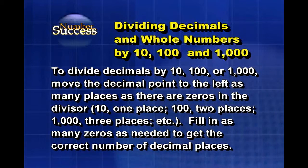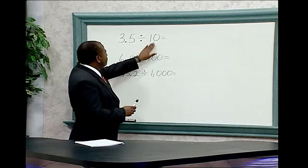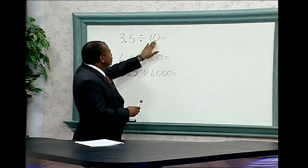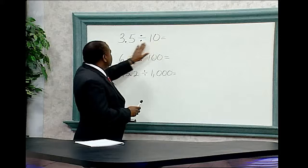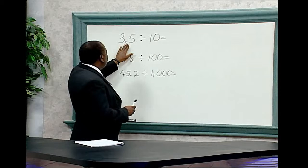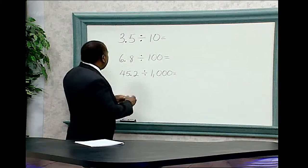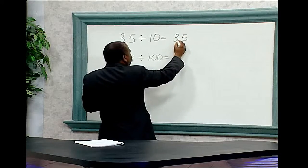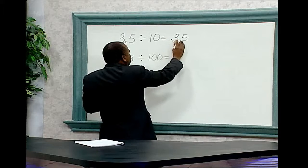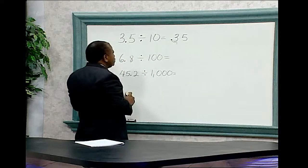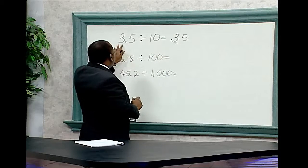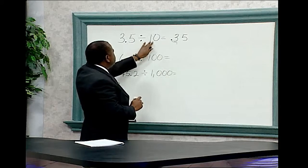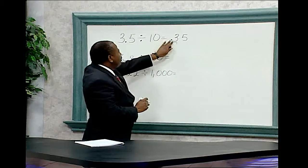Fill in as many zeros as needed to get the correct number of decimal places. Example: three point five divided by ten. The ten has one zero; therefore the decimal point must be moved one place to the left. Three point five — move the decimal point one place to the left — equals point three five. Therefore, three point five divided by ten equals point three five.